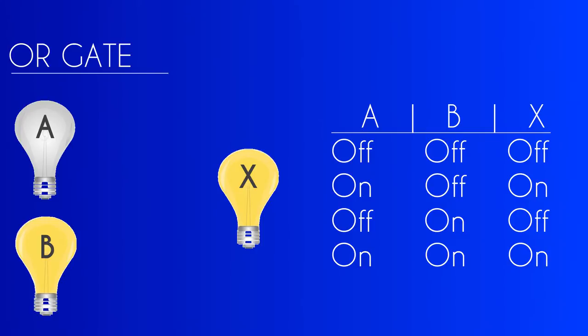If A and B are turned on, X will turn on as well, except in the case of an exclusive OR gate, which we'll cover later. The only case where light X will fail to turn on is if light A AND light B are not turned on.